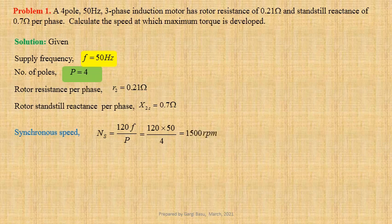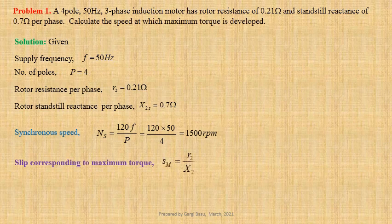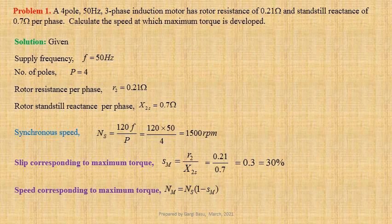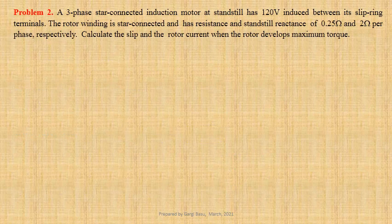Slip corresponding to maximum torque SM equals R2 divided by X2S equals 0.21 divided by 0.7, that gives us 0.3 or 30 percent. Speed corresponding to maximum torque Nm equals Ns into 1 minus SM equals 1500 into 1 minus 0.3, that gives us 1050 RPM.